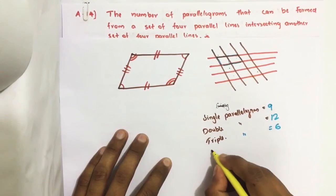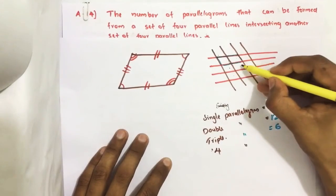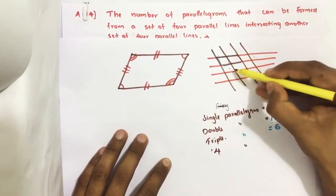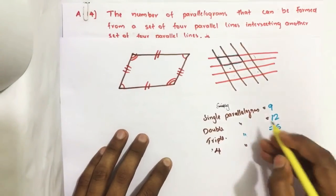Then with 4 parallelograms: 1, 2, 3, 4. Here it is a parallelogram. Then 2, 3, 4. Total 4 are there.